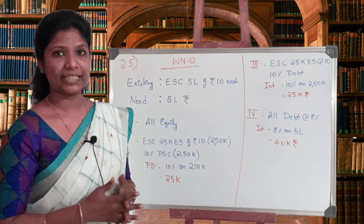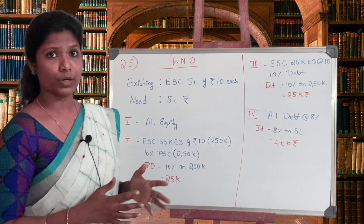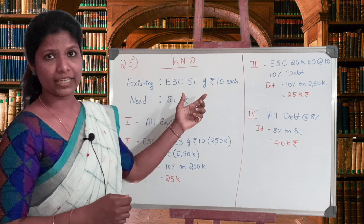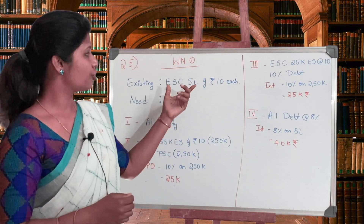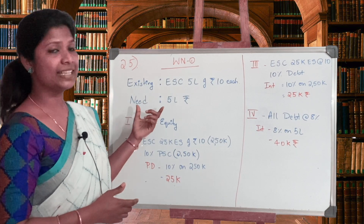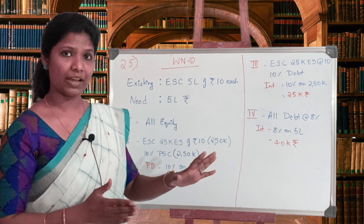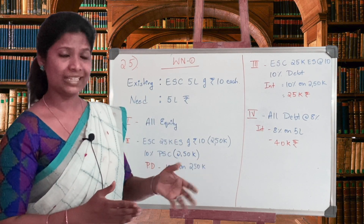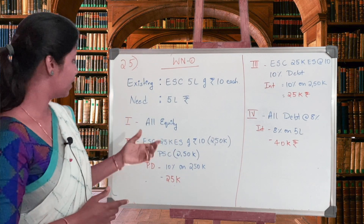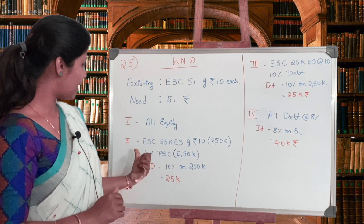Moving on to question number 25. The first working note: the existing capital is 5 lakh equity share capital, each of rupees 10. The company needs an additional 5 lakh rupees. So existing is 5 lakh rupees equity and the company needs an extra 5 lakh rupees equity.